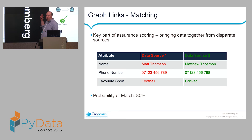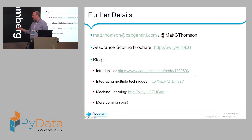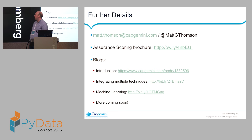We've built our machine learning model, applied our rules, built our anomaly detection, and built our links between the high-risk and low-risk buckets. Any low-risk cases that have survived all of those steps unscathed — we can really say they are low risk. If you want more details, feel free to get in touch. We've also published an assurance scoring brochure going through all the details, and we're in the middle of a blog campaign with more posts coming soon.